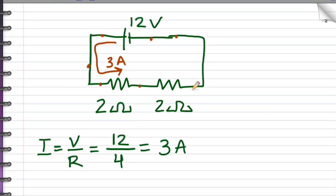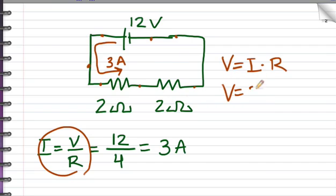Now, if I want to calculate the voltage of the individual resistors, I can use Ohm's law again. If I rearrange this, I get voltage equals current times resistance. So to find the voltage of an individual resistor, I multiply its current, 3, by its resistance, 2, and I get 6 volts. So this resistor has a voltage of 6 volts, and this resistor has a voltage of 6 volts. They add to the voltage of the battery.